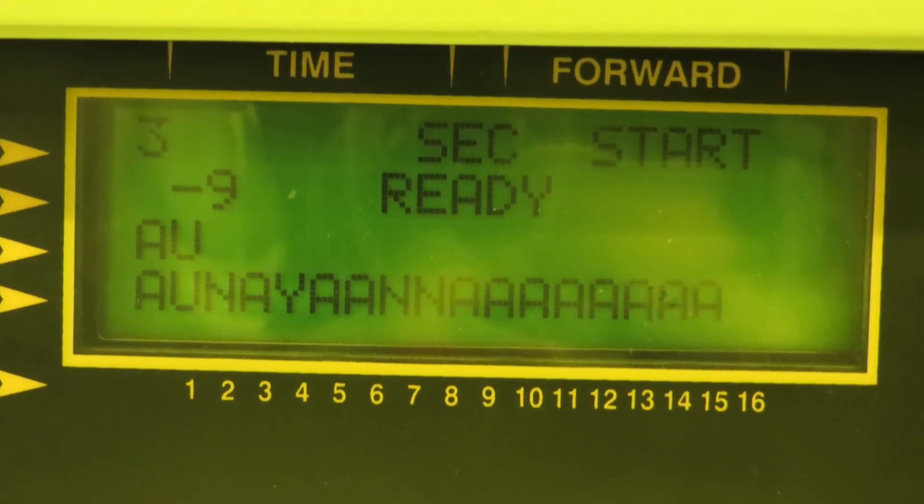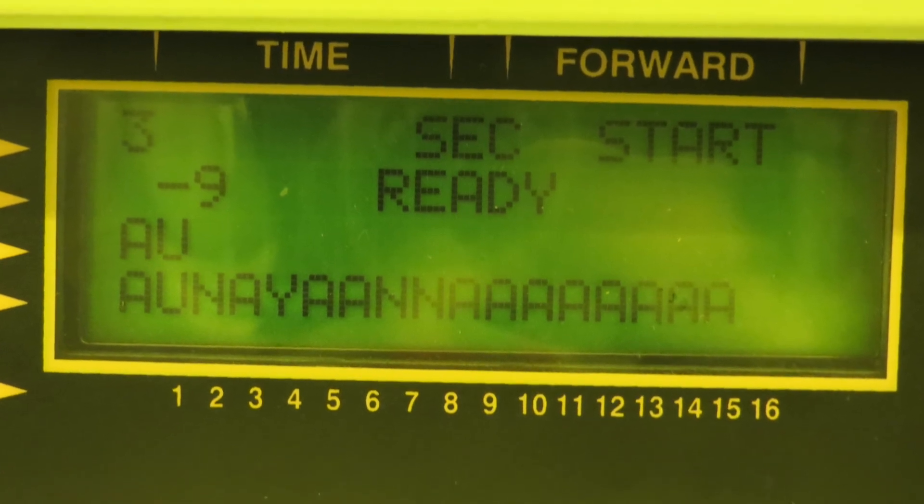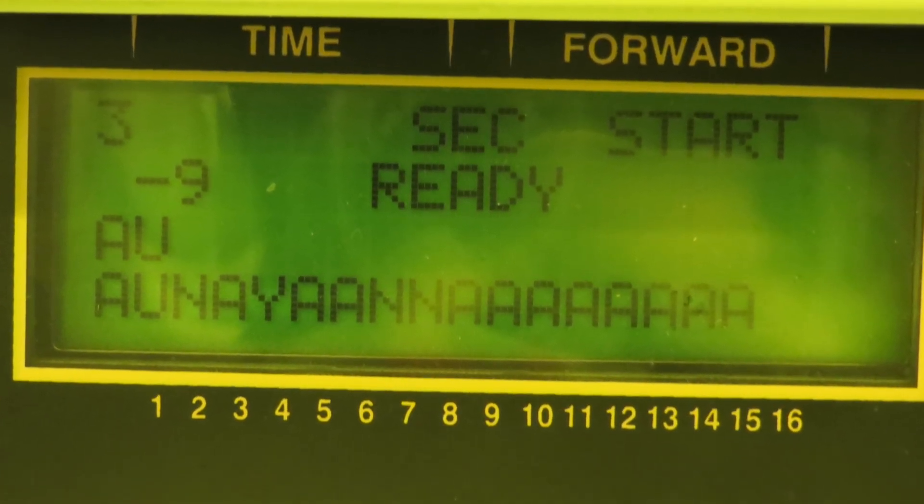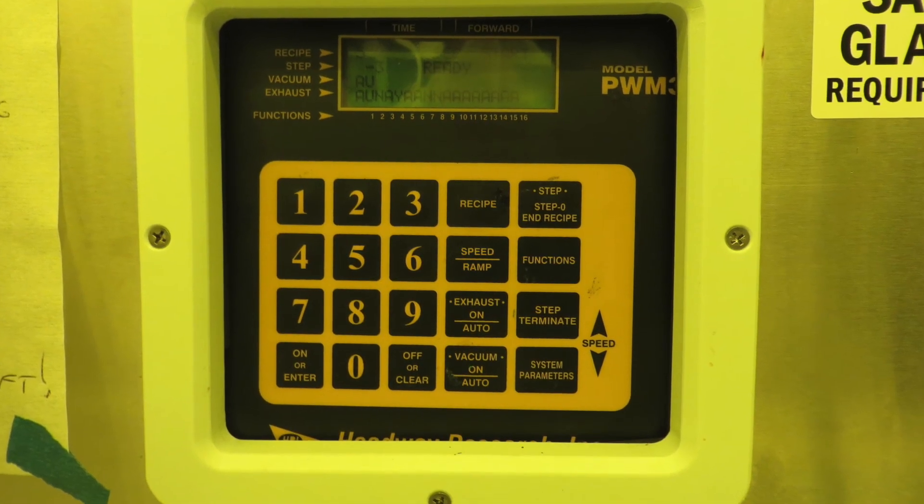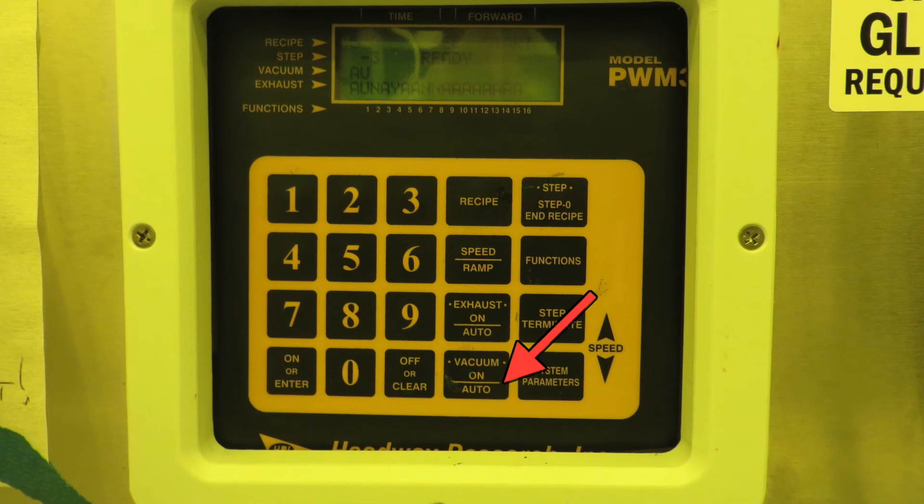When vacuum is in auto mode, it pulls vacuum during the entire cycle. But it is also possible to manually turn vacuum on and off. If you want to turn vacuum manually on, push this vacuum on/auto button. It will toggle back and forth between manually on and auto.